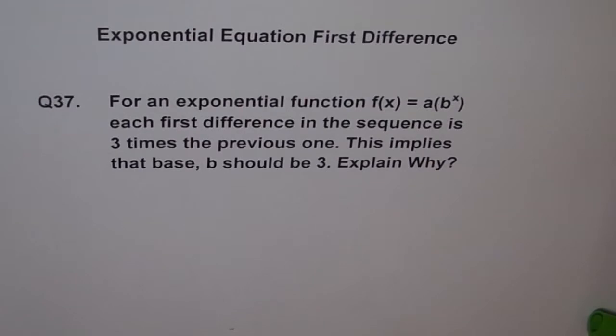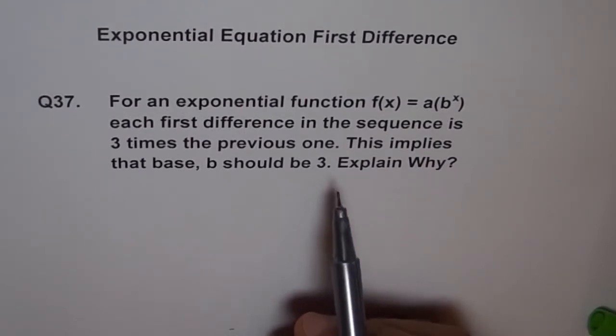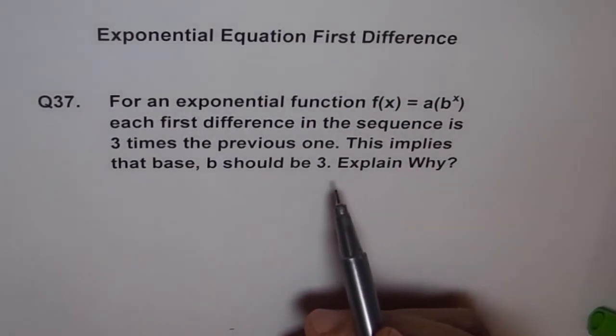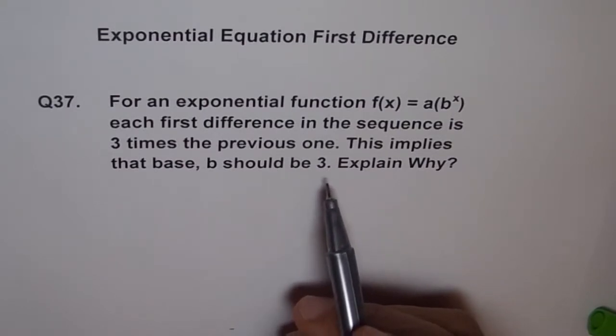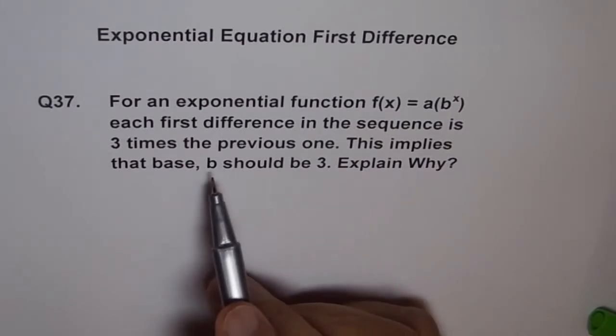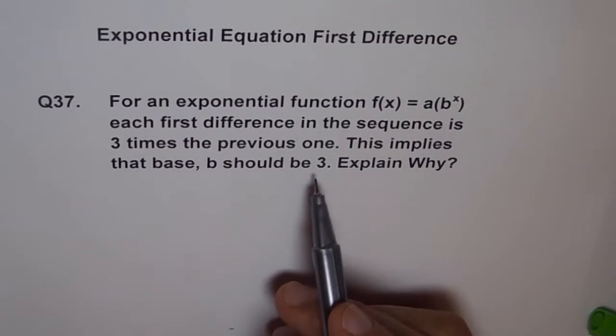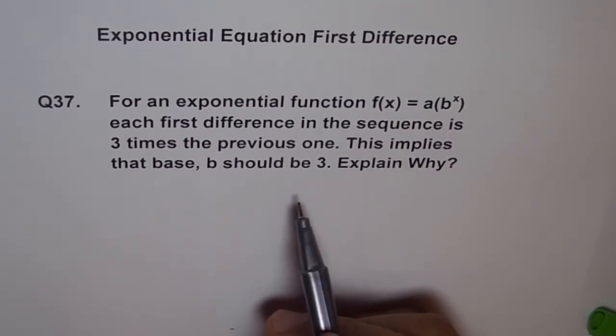Now what we can do here is we can take an example and then do our problem. That's one way. Second is we can do in general also. Let me take one example. Let's say we say why b should be 3. Let's take b as 3 and see what happens. And then we will explain it in general also.